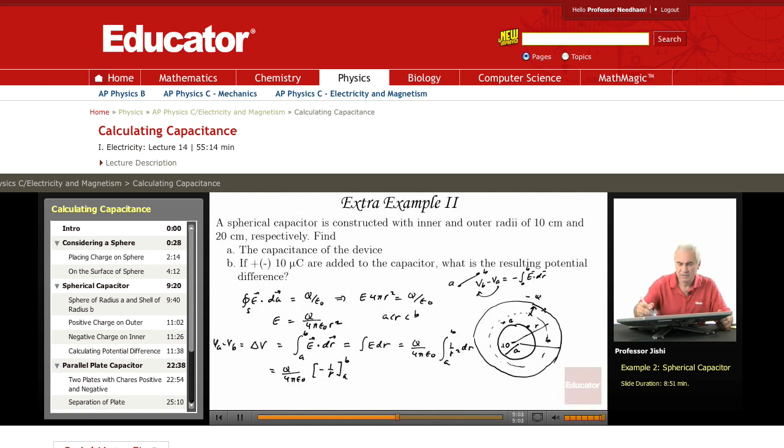Which is equal to, when r is B, it's minus 1 over B, and then at A, it's a minus, another minus, so plus 1 over A. So this is Q over 4 pi epsilon 0, 1 over A minus 1 over B.